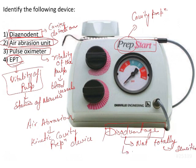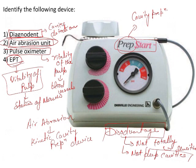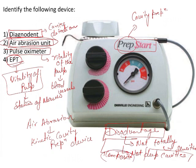Due to the abrasive nature of the particles, air abrasion is not recommended for deep cavities — only for shallow cavities. Additionally, it is only compatible with systems that have bonding capacity, meaning it is compatible with composite restoration. Amalgam or GIC fillings cannot be done with this system because those require proper retention features. Better bonding restorative materials are required for this system.